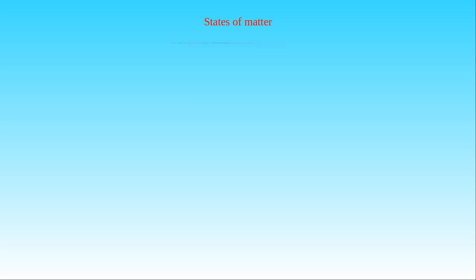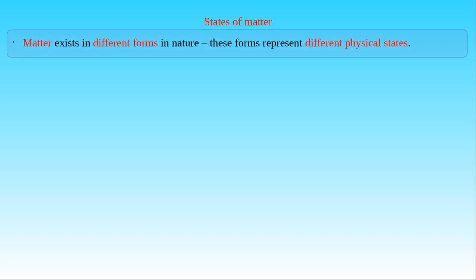Our everyday experience shows us that matter exists in different forms in nature, and these forms represent the different physical states of matter. We can see four states of matter in the world we live in: solid, liquid, gas and plasma state. There also exist some exotic intermediate states of matter, such as Bose-Einstein condensates or quark-gluon plasma.